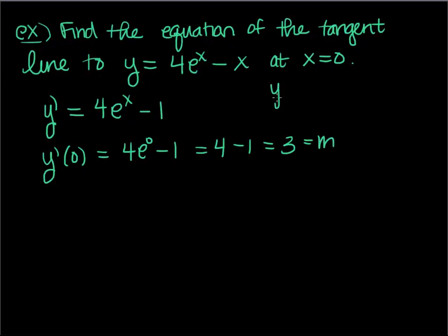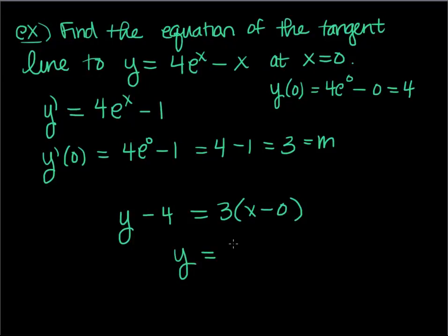When x is 0, what is y? y(0) would be 4e^0 - 0 which is just 4. Remember e^0 is 1, subtract nothing, I get 4. So what is the equation of my tangent line? y - 4 = 3(x - 0). I can't help myself—usually I leave my lines like that, but because of that 0 that's really nice and pretty, I can put a little bow on it and we get y = 3x + 4.